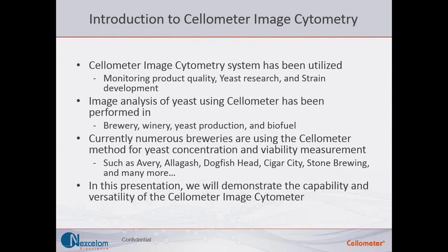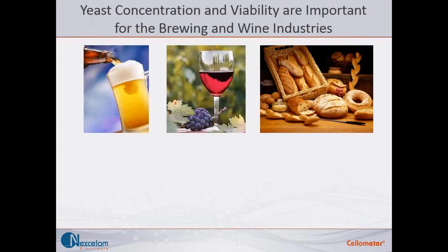Cellometer image cytometry is an image-based system — essentially an automated microscope. We have been using the system to monitor product quality, yeast research, and strain development specifically for the brewing industry. The image analysis has been performed not just in breweries, but also in wineries, yeast production facilities, and biofuel applications. Breweries such as Avery, Allagash, Dogfish Head, Cigar City, and Stone Brewing are some of our references.